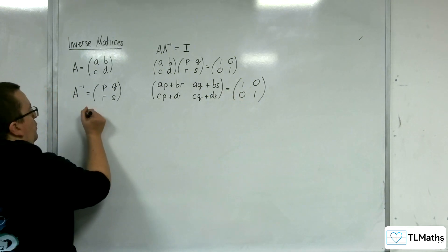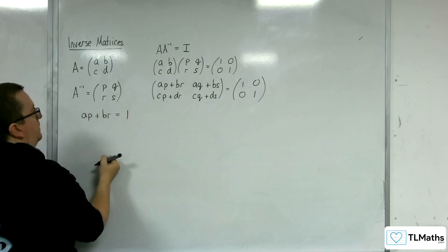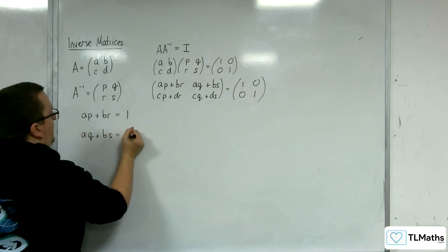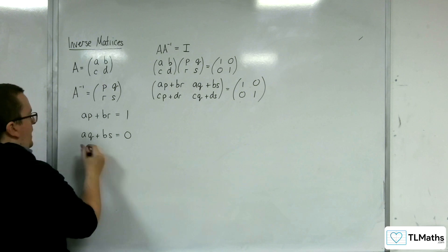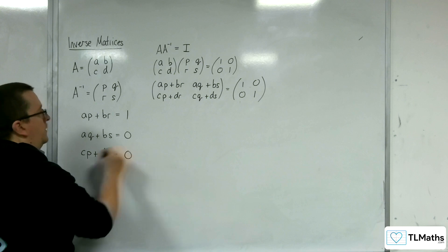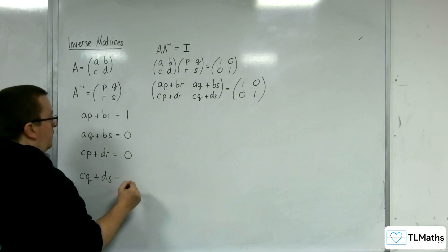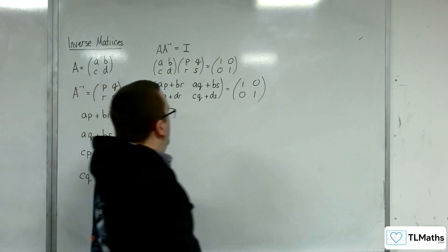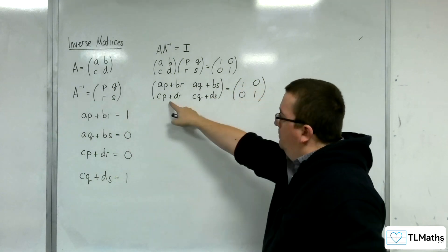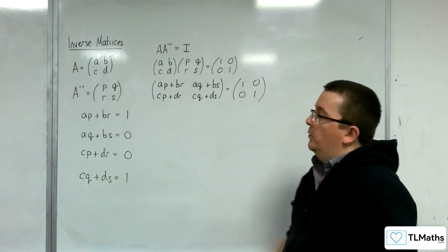That gives us four equations. We have AP + BR = 1. We have AQ + BS = 0. We have CP + DR = 0. And CQ + DS = 1. So AP + BR = 1, AQ + BS = 0 — that's equal to that, that's equal to that. This gives us four equations to work with.